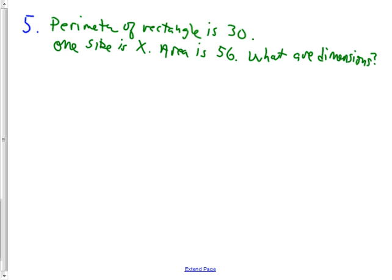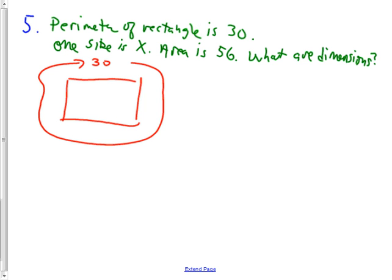The perimeter of a rectangle is 30, alright? So if you know the distance all the way around this rectangle is 30, I usually like to show that in my picture by going something like that. One side is x. There you go. So the area is 56. I usually put that on the inside, because that, to me, seems like where area should be. And what are its dimensions?